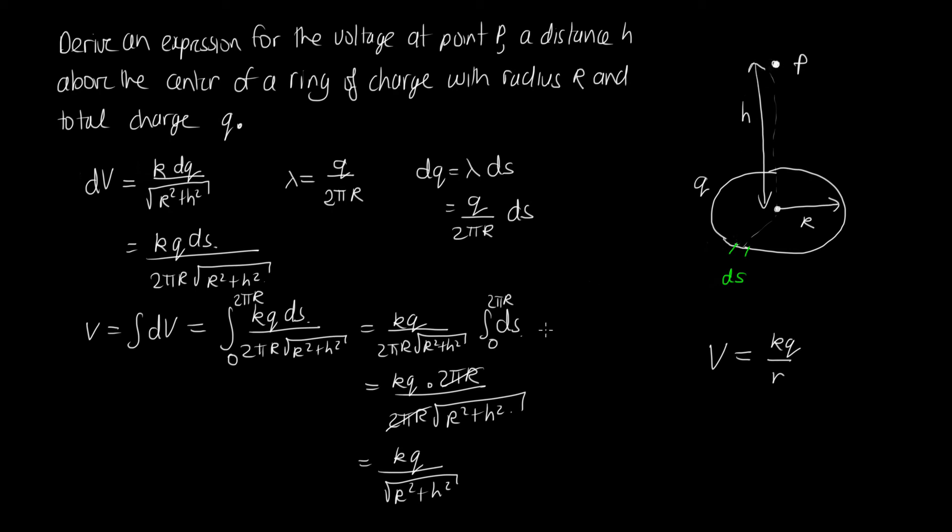Now it's always a good idea just to make sure that our answer makes sense in some limiting cases. So let's imagine that the radius goes to 0. So this ring is getting really, really small.